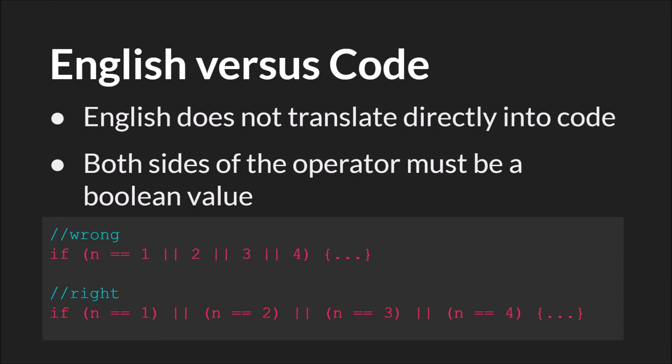Before we end, I want to mention one thing briefly. English does not translate directly into code. And what I mean by that is even though the way we use logical operations in English is very close to the way we use it in code, it isn't exact. In English, you could say if n equals one or two or three or four, and that would make sense. But you cannot do that in code, or at least it wouldn't do what you expect it to do.